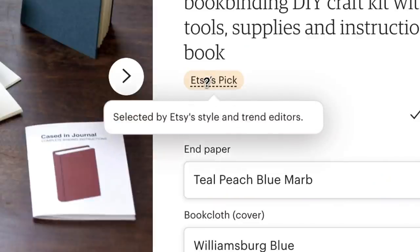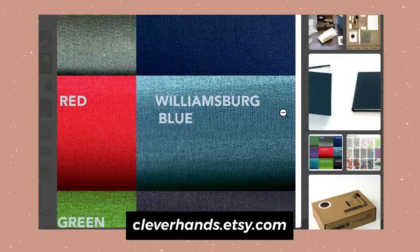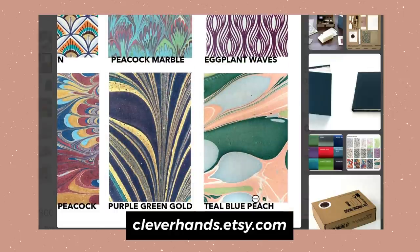I found one of Etsy's top picks from a shop called Clever Hands, and it seems like a good kit. I was able to choose the color of my book cloth. I went with this blue, along with the endpaper designs, and I went with this marbly texture.